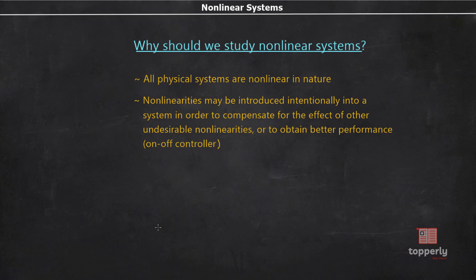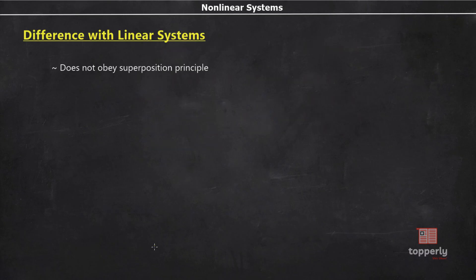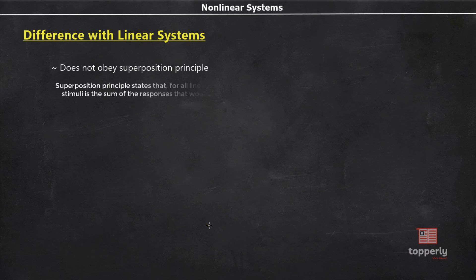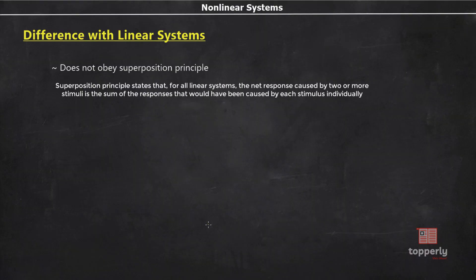Now we will see how a non-linear system differs from a linear system. The main difference is that linear systems obey the superposition principle while non-linear systems do not. Superposition principle states that for all linear systems, the net response caused by two or more stimuli is the sum of the responses that would have been caused by each stimulus individually.